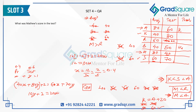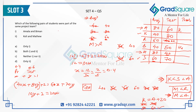For question 4: what is Matthew's score in the test? Matthew's test score is 40. For question 5: which pair of students were part of the same project team? The three project teams are: A & M (both scored 80), K & B (both scored 40), and R & S (both scored 60).